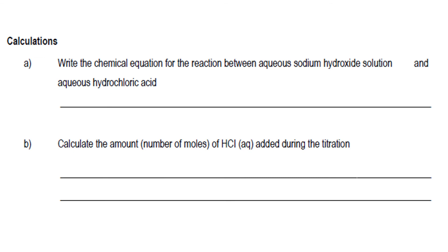They can also ask you to write the chemical equation of reaction between aqueous sodium hydroxide solution and aqueous hydrochloric acid because we were using these two chemicals. The chemical equation is HCl + NaOH gives you NaCl aqueous and H2O aqueous.